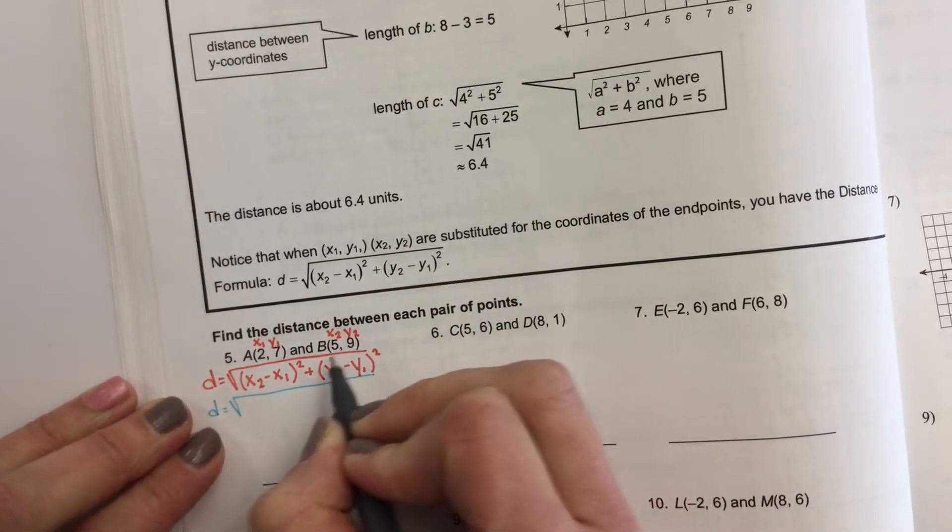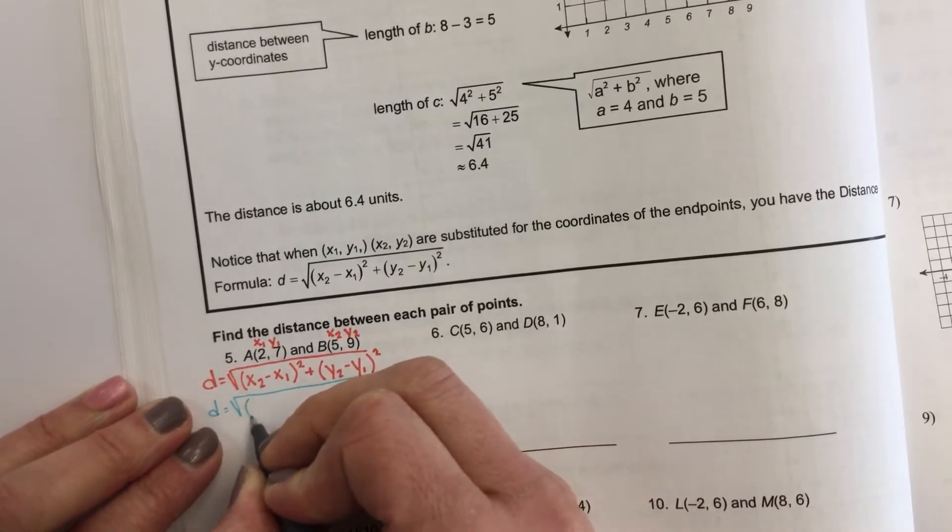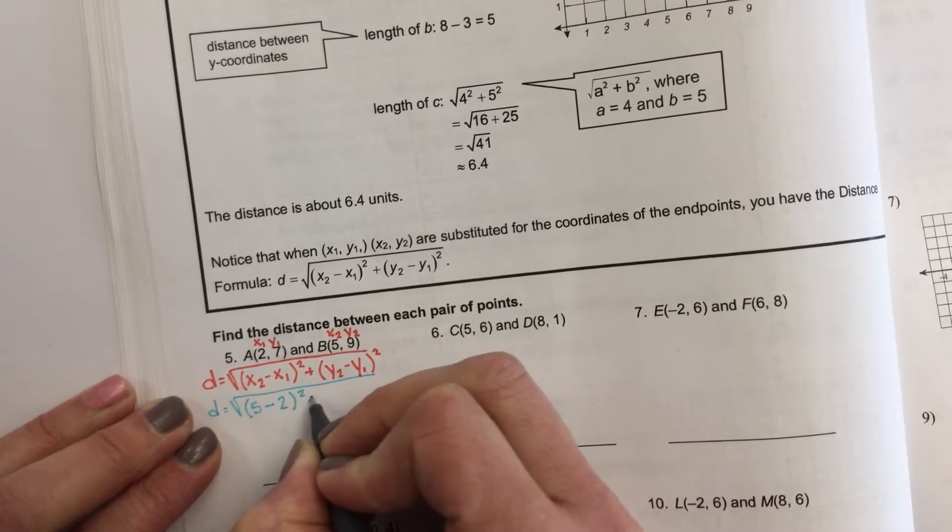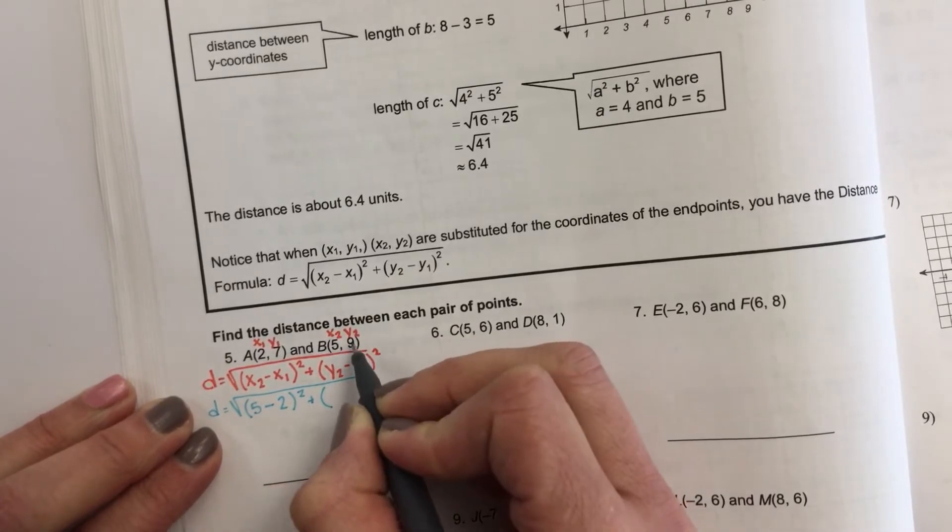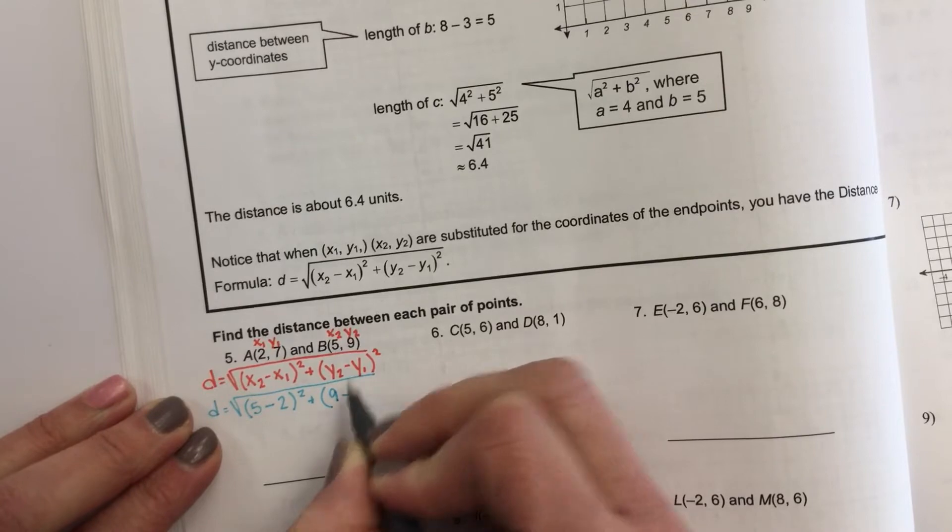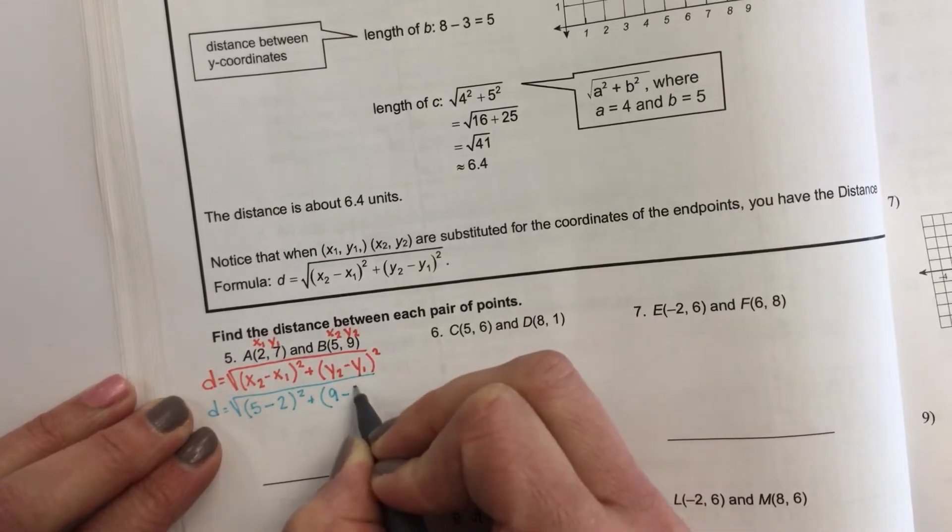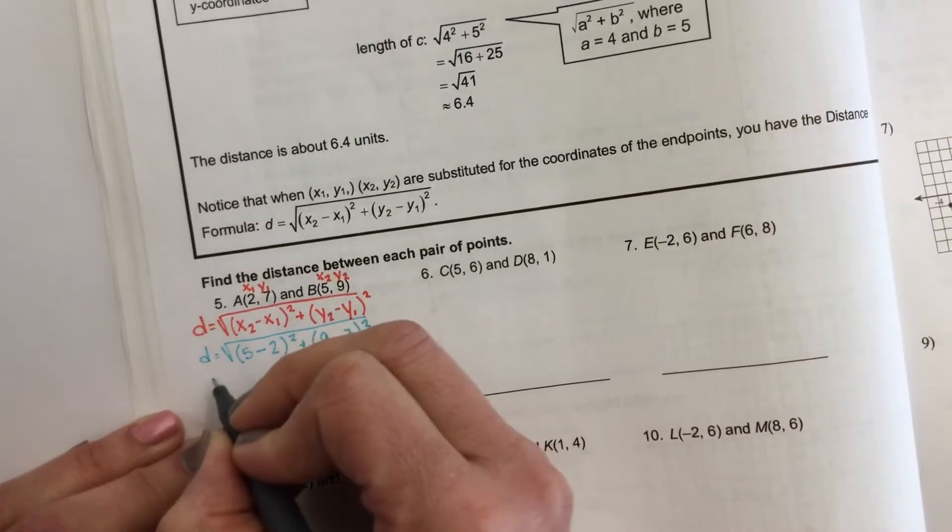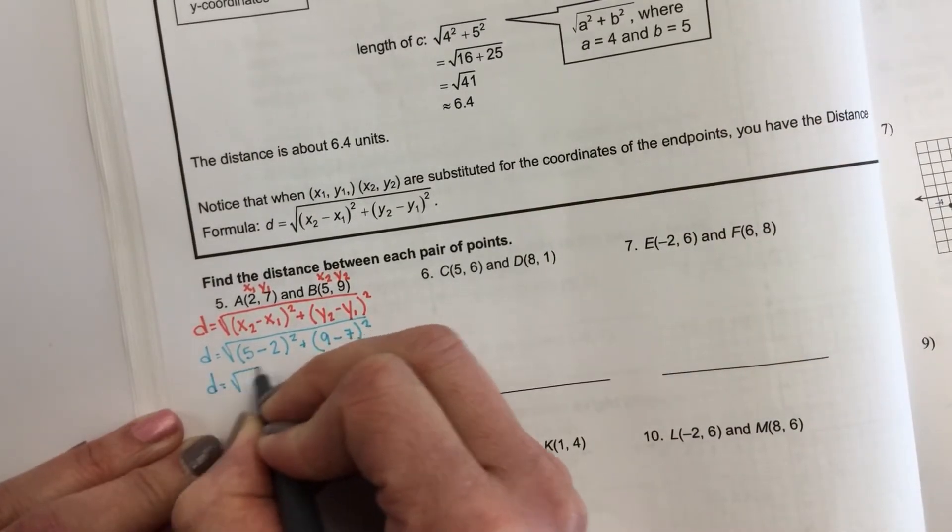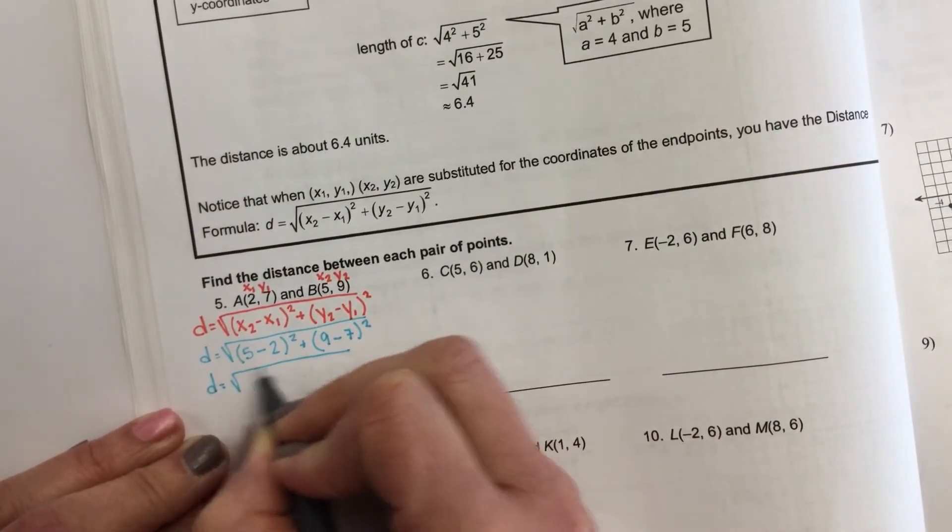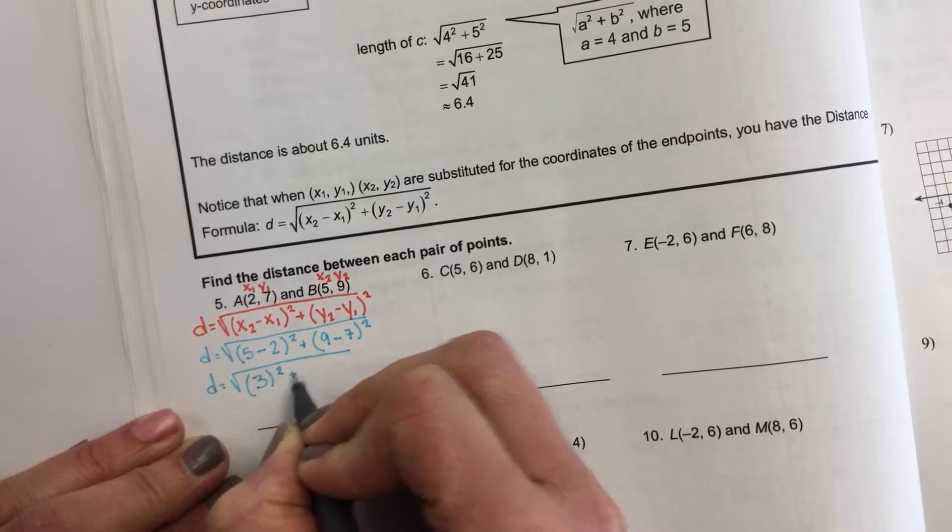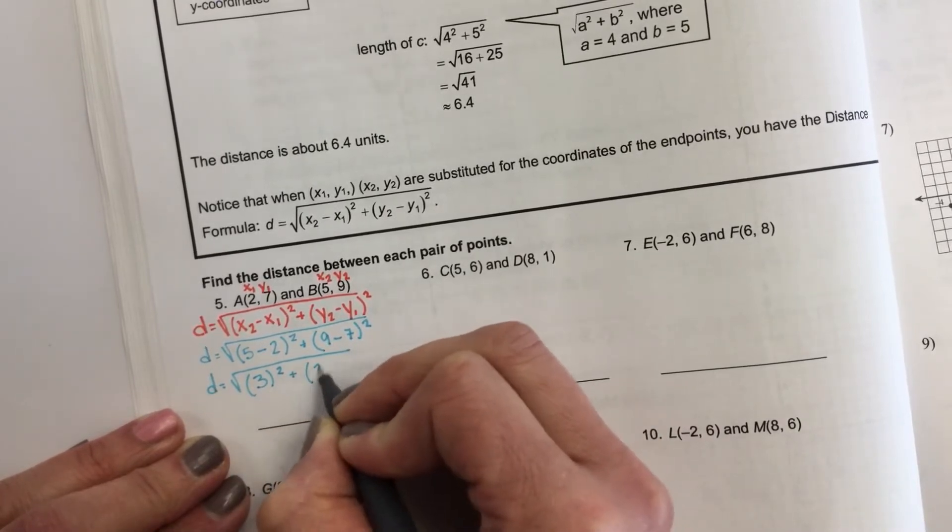My x2 is 5, my x1 is 2. And then y2 is 9, and y1 is 7. So let's keep going. We've been practicing with our square rooting, so it's not a problem. 5 minus 2 is 3. 9 minus 7 is 2.